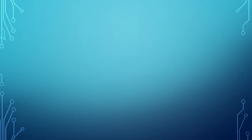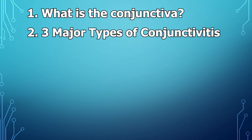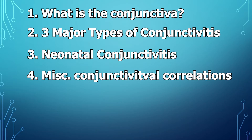We're going to break this video up into four sections: one, what is the conjunctiva; two, the three major types of conjunctivitis; three, neonatal conjunctivitis; and four, the miscellaneous conjunctival correlations.